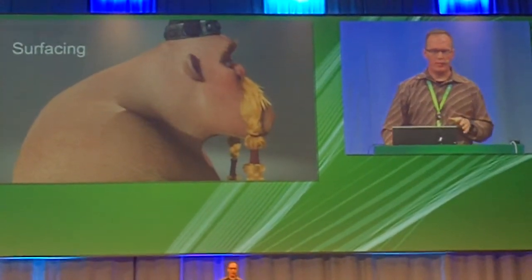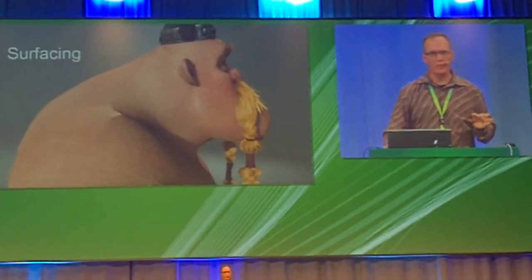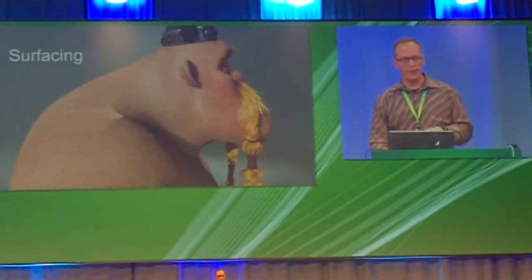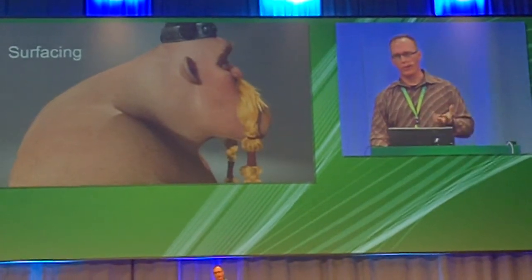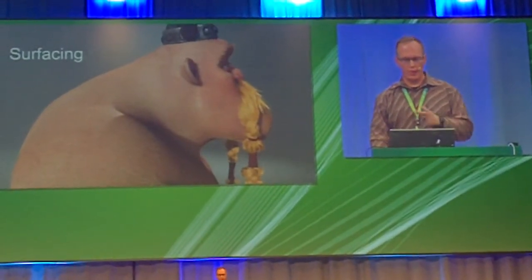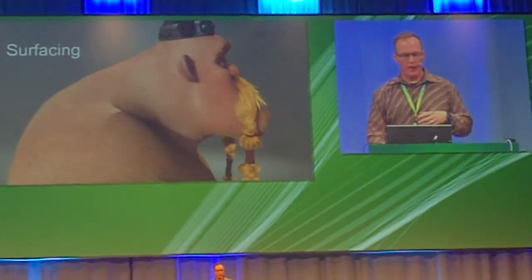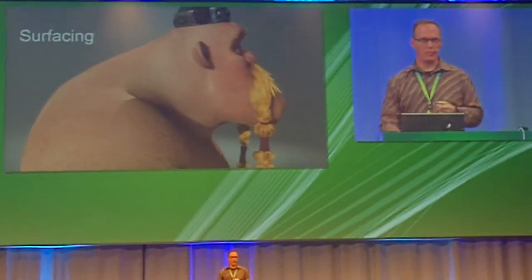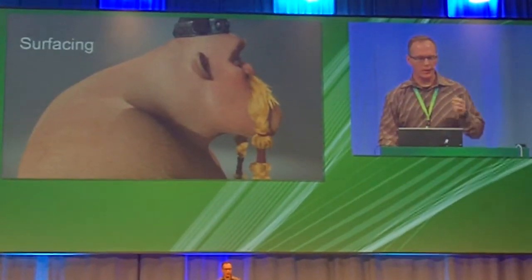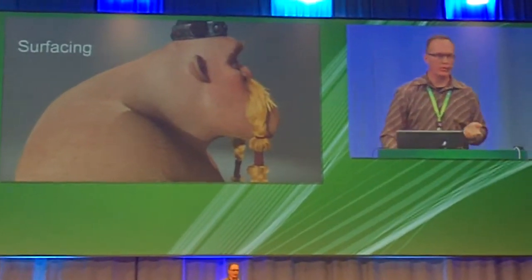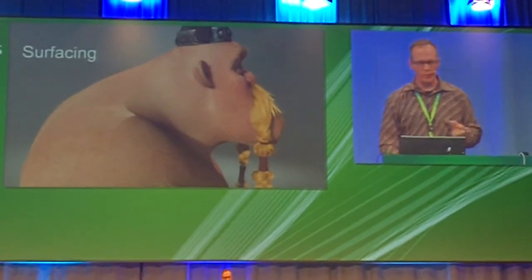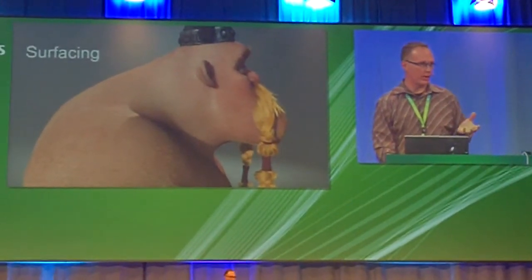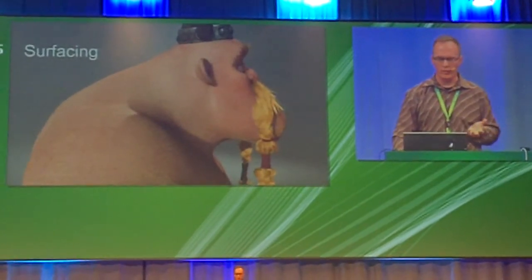The next stage is surfacing. The artists in the surfacing department work primarily with texture and with color. They create materials that are used to cover the surfaces of the models, and this controls what they're going to look like when light is applied to the surfaces. Human skin, in particular, requires lots of special surfacing work to be convincing. Until a character is surfaced, you really don't know what it's going to look like.